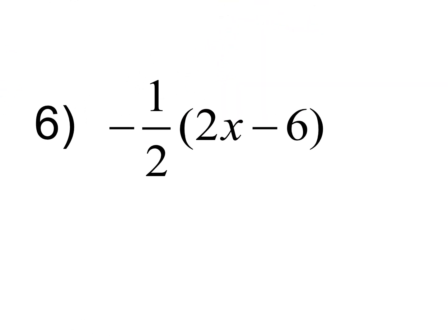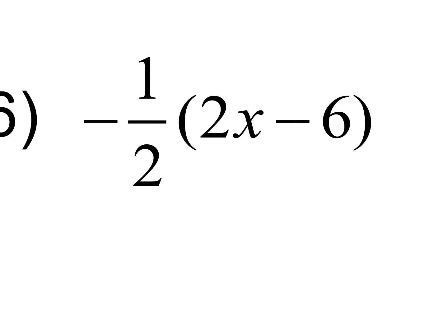Once you get really good, you'll notice that multiplying by one half is really just dividing by two. If you say 40 times one half, that's 40 divided by two, which is 20. So when you have even numbers and it's one half out here, it's pretty easy because you can divide by two and probably do it in your head. One half times two x is one x, and negative one half times negative six is positive three, giving negative x plus three.